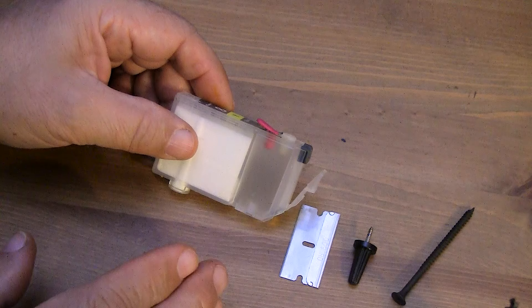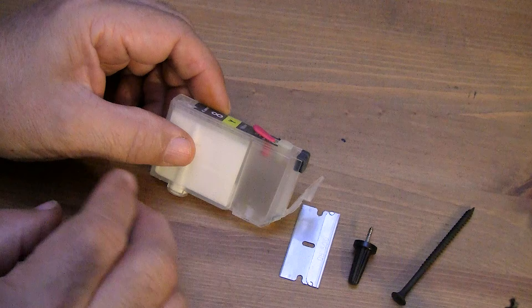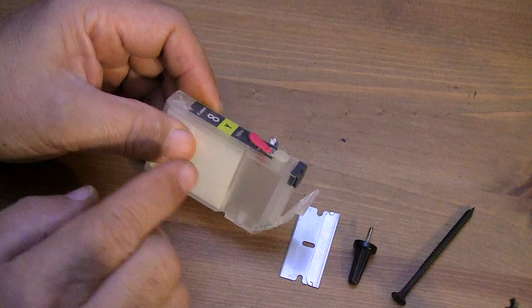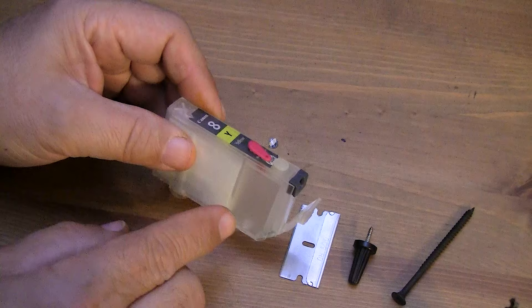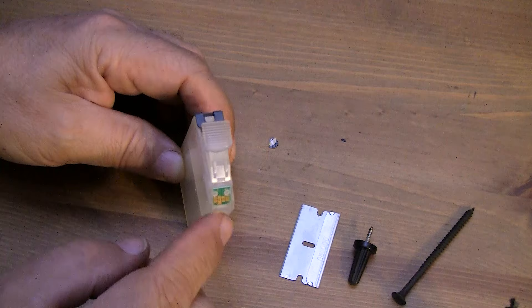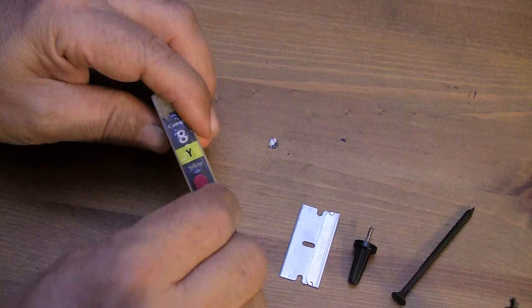That's all it takes. I know some people that I have actually corresponded with, elderly gentlemen that have problems with their hands, and this is a little bit difficult for them to do. But once you get this done, if you could get someone with better use of their hands to perform this act for you first, or you can buy pre-flushed and already modified carts from Precision Colors. And you can basically just transfer the chips from your original, say for instance CLI-42 carts for the Pro 100, over to these equivalent carts.